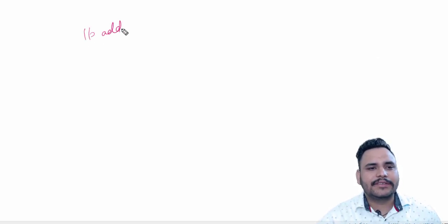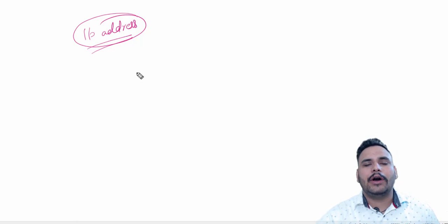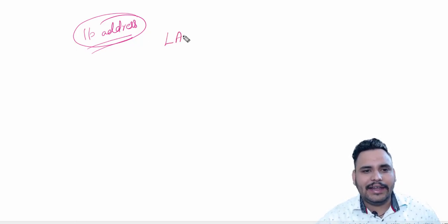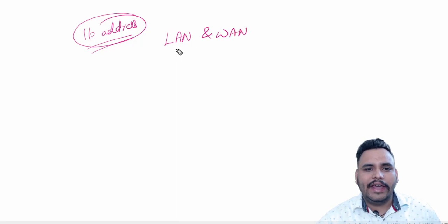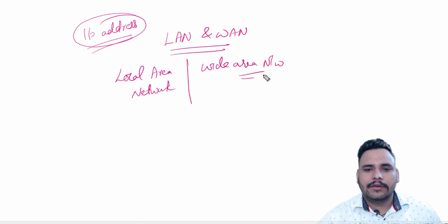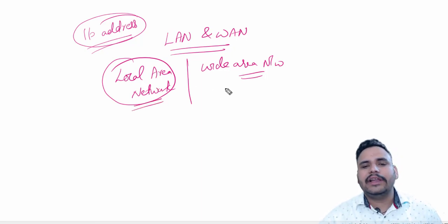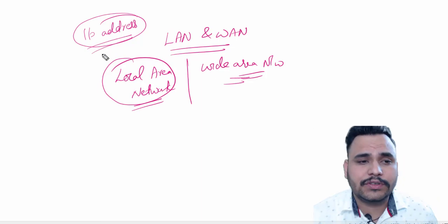Hello friends. Our today's topic is about the logical address of networking, which is named as IP address. So today we are going to discuss about what is an IP address. But before IP address, we need to know one more topic here, which is LAN and WAN — what is local area network and what is wide area network. I am going to start with local area network first, because in both local area network and wide area network we are going to use IP address.